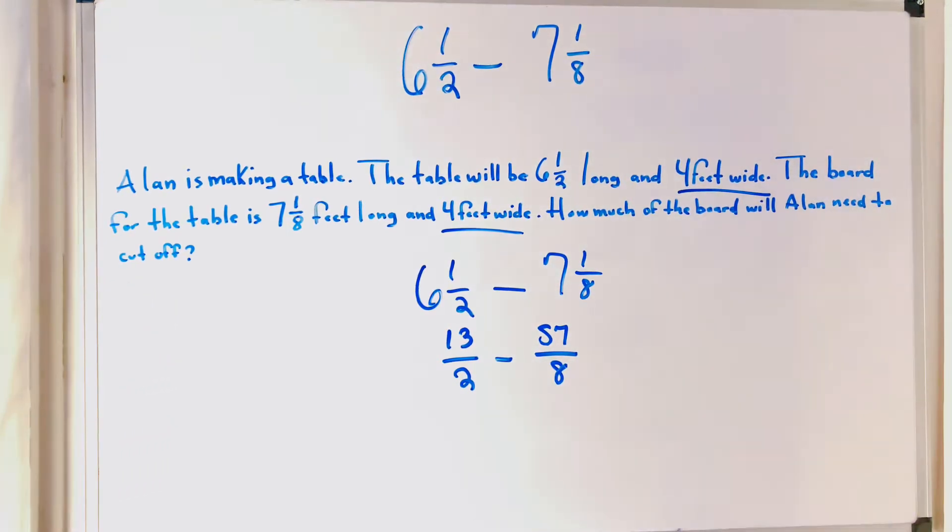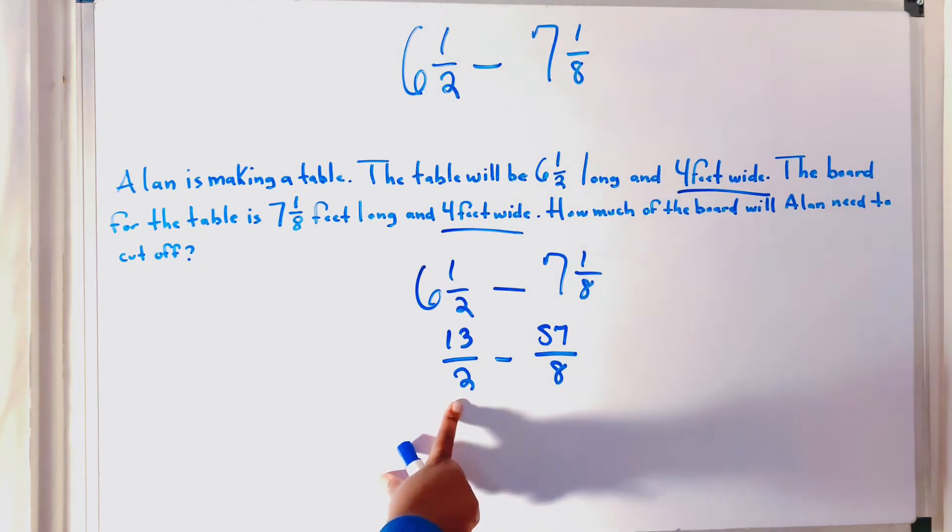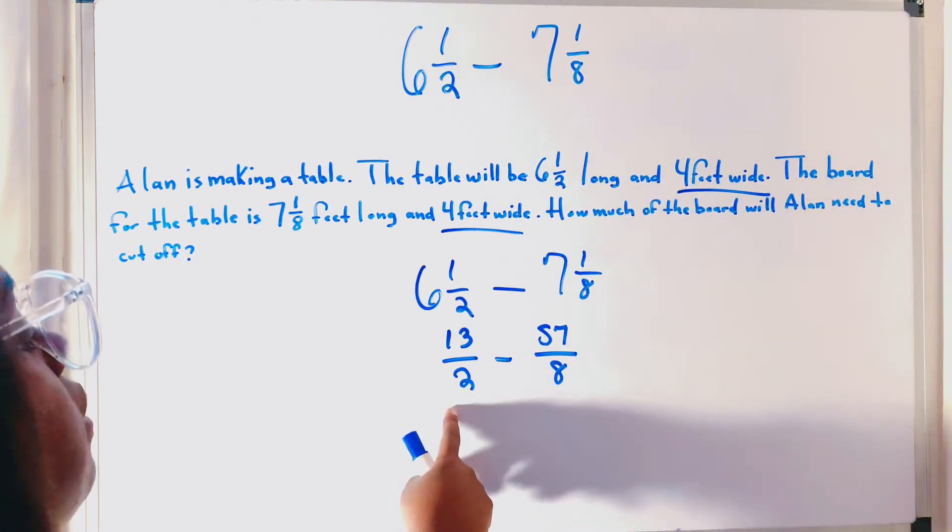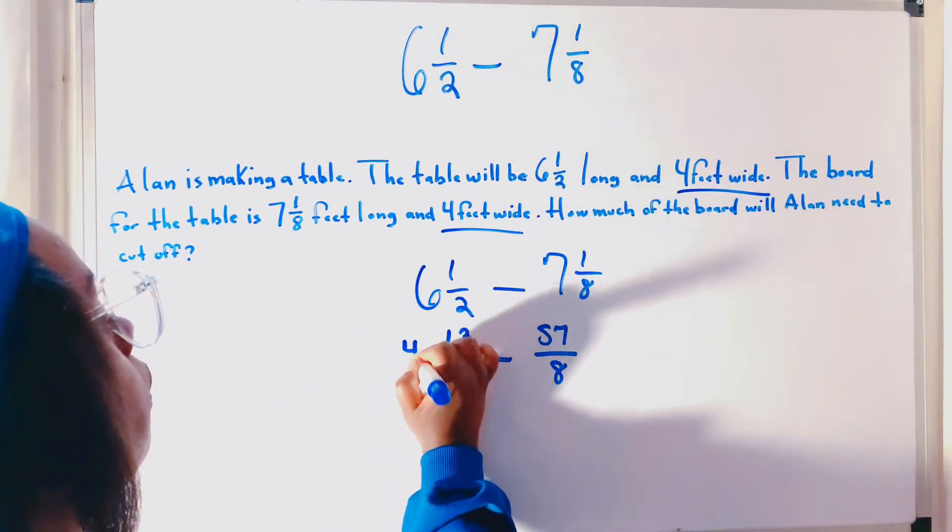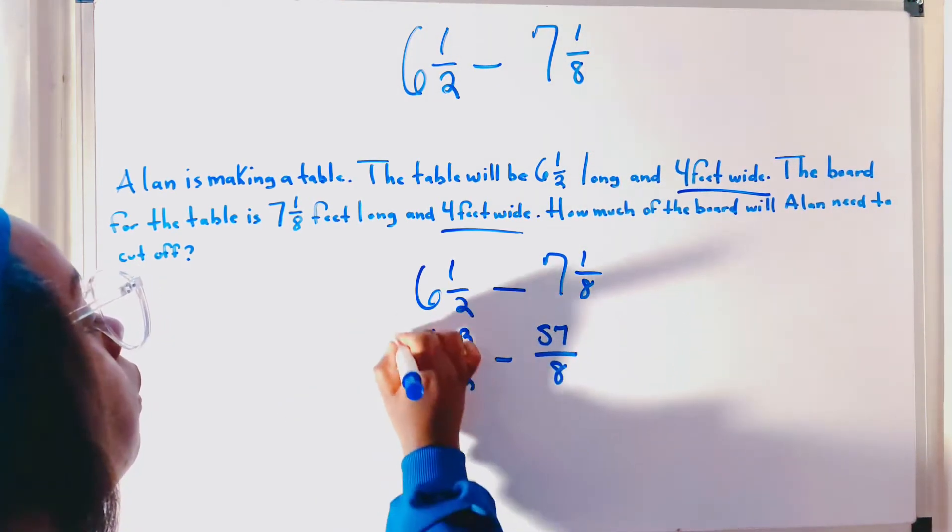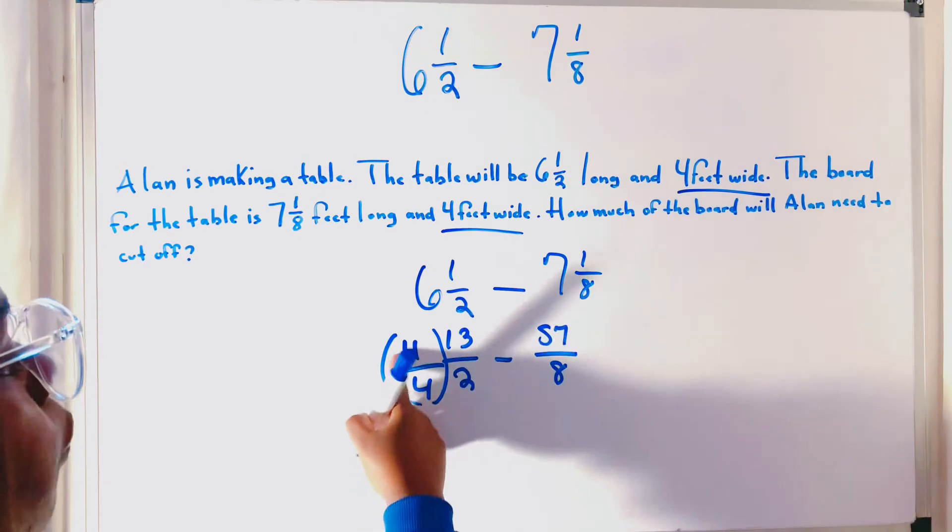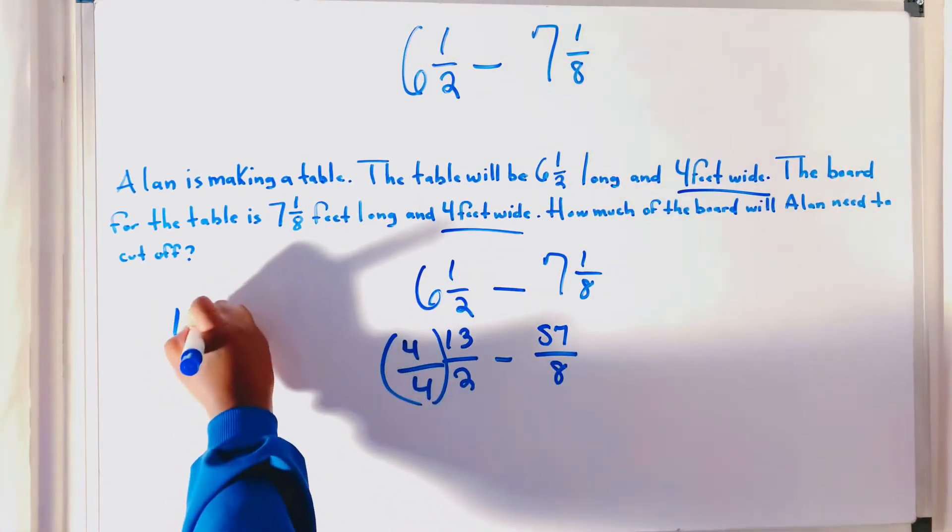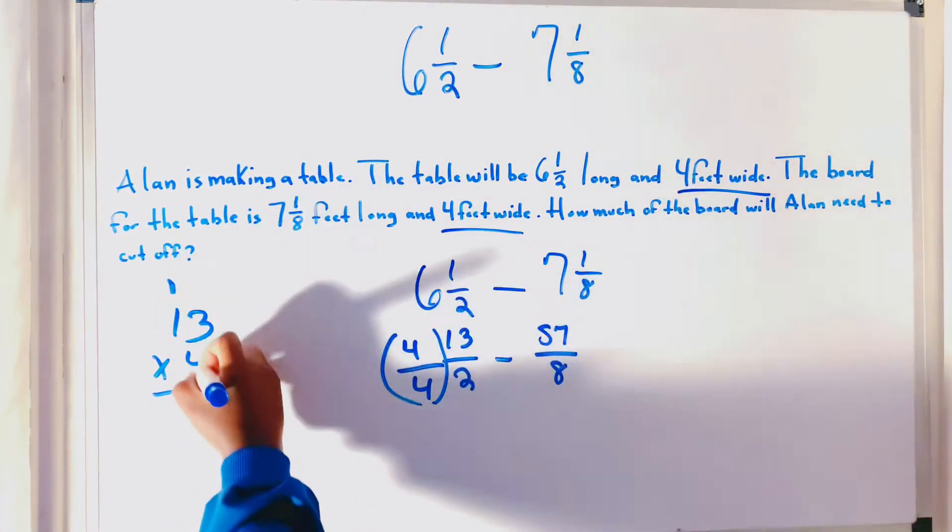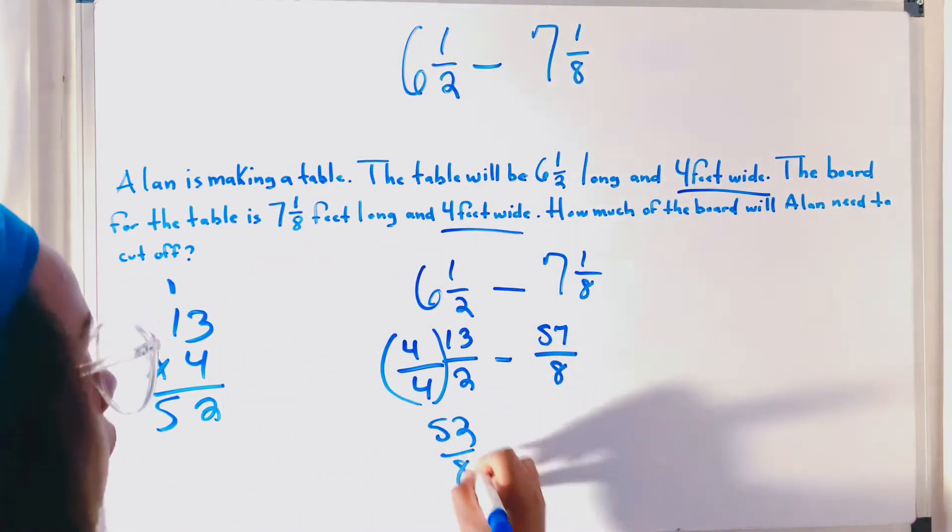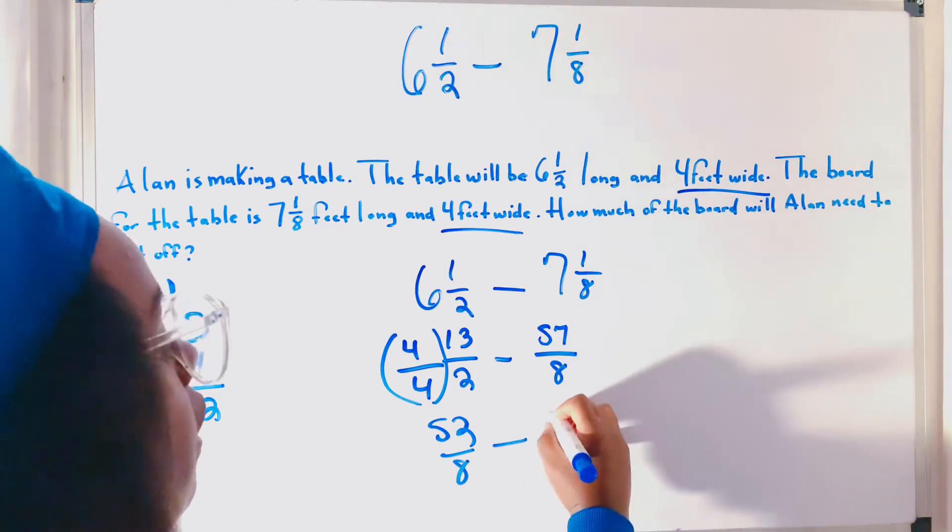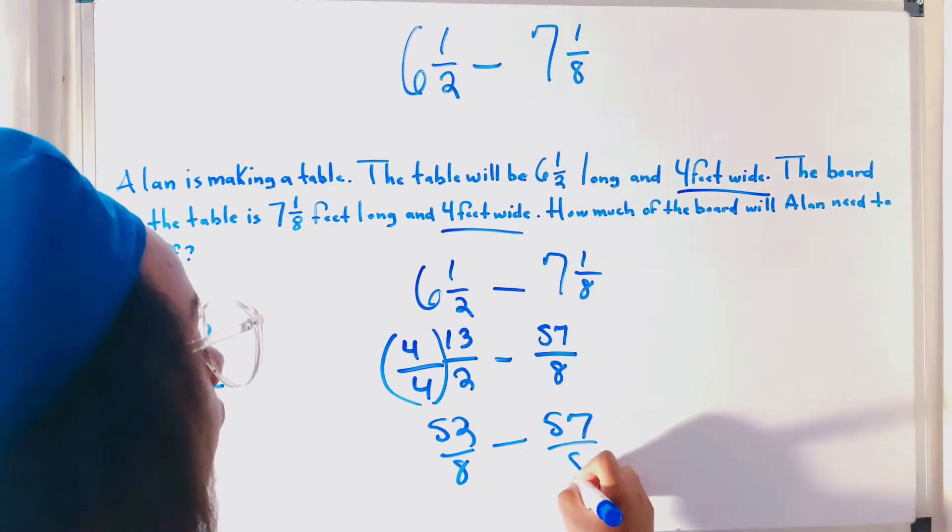Are we done yet? No, we're not done because our denominators are not the same. So, what we're going to do is multiply this fraction here by 4. All right, 4 times 13, I don't know off the top of my head. All right, we got 52. 52 over 8.